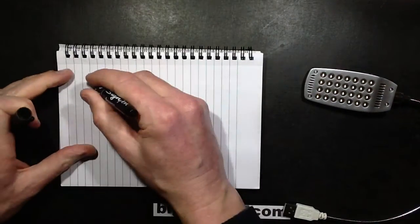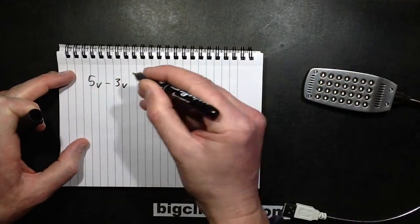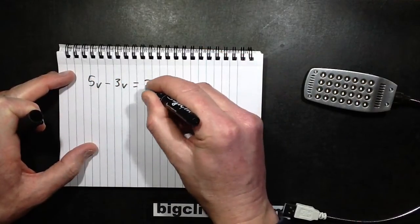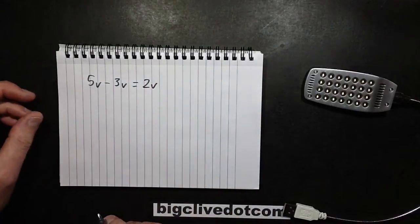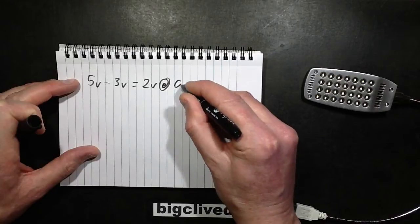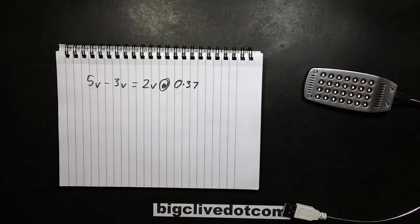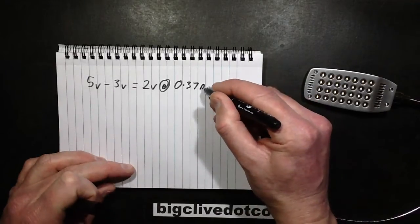So it's 5 volts and the LED voltage will probably be in the region of 3 volts, equals 2 volts to drop across the resistor. 2 volts at 0.37 amps, which is 370 milliamps but that's 0.37 amps.